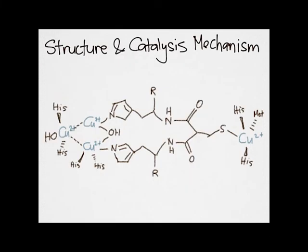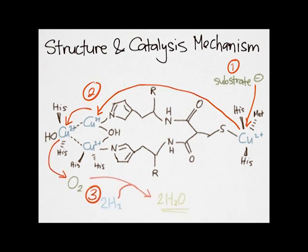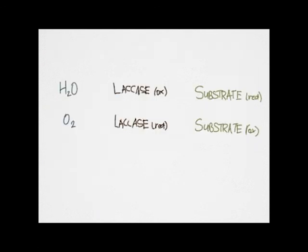The laccase catalysis works as follows. First, the substrate binds to the T1 copper and is oxidized. Then the electron is transferred from the T1 copper across the molecule through the intermediary T3 copper to the T2 copper, where the O2 binds to the T2 copper and is reduced to water. This is the simplest case of laccase catalysis.